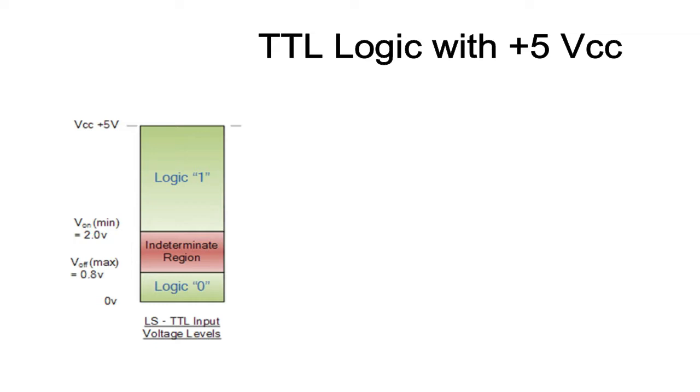As you can see from the diagram, the input voltage to TTL devices must be 2 volts to 5 volts in order for the device to interpret it as logic 1. Meanwhile, for logic 0, input voltage must be around 0 to 0.8 volts.